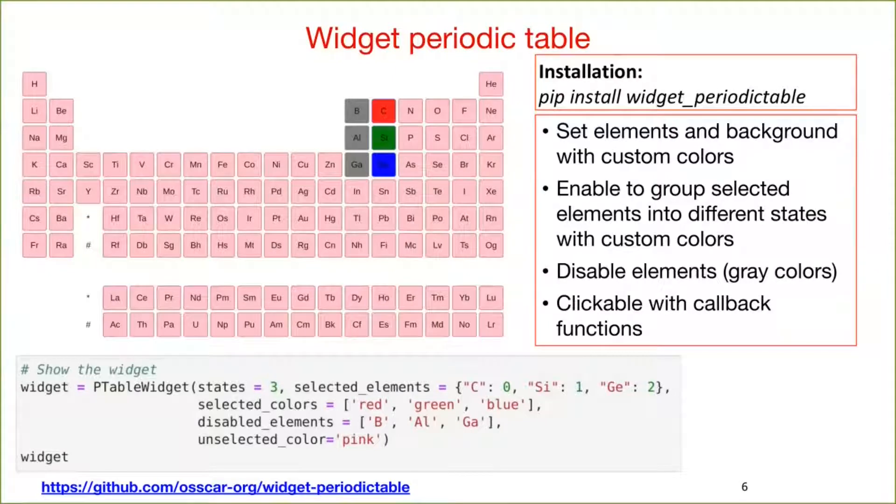The figure at the bottom shows how to call the widget from Python. State variable is how many different states you want to group. And you can define the color for each state. The selected underscore elements is a dictionary, which contains the selected elements and their states. Here, carbon is in state zero, silicon is in state one, and germanium is in state two. We define the color from state zero to two as red, green, and blue. You can see their colors in the periodic table. The gray color elements are the disabled elements, which are not clickable.